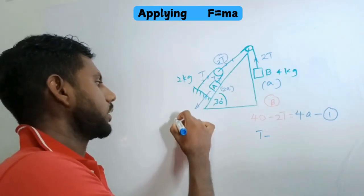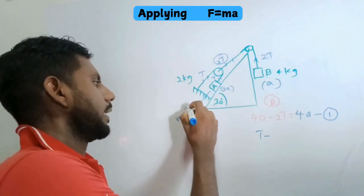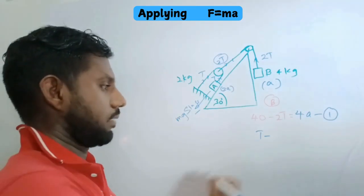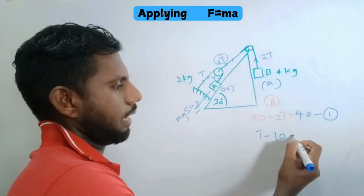In this direction it's mg sin(theta), so 20 sin(30), which is half of it, 10. So T minus 10 equals 4a. This is the second equation.